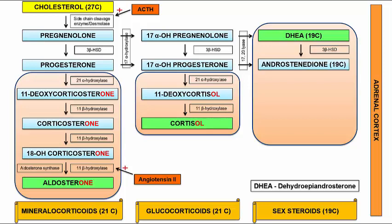In summary, the main mineralocorticoid secreted by the adrenal gland is aldosterone, the main glucocorticoid is cortisol or hydrocortisone, and the main androgenic precursor is DHEA or dehydroepiandrosterone. The important enzymes to remember in this pathway are 17-alpha hydroxylase, 21-alpha hydroxylase, and 11-beta hydroxylase. In the next video we will discuss the deficiency of these enzymes and their clinical manifestations.